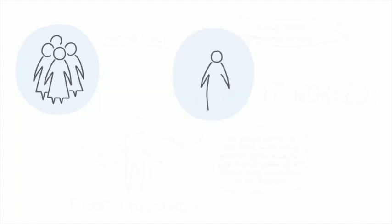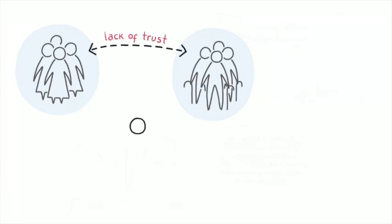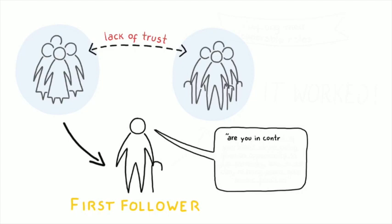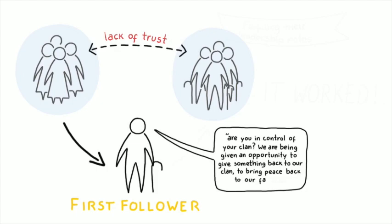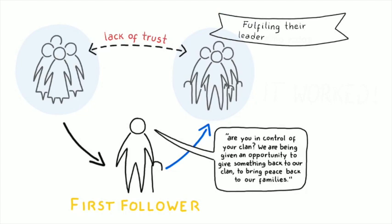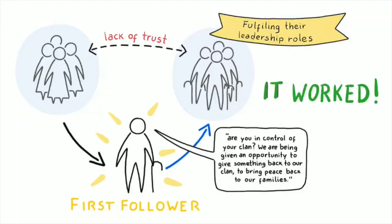As conversations between the women and the elders evolved, there was a natural lack of faith and trust from the elders. But there was one exception, an outlier. This particular very old man became the first follower of the movement originated by the women. He managed to play the key role of bridging the ideas of the women into a language that could be understood by his fellow men. 'Are you in control of your clan? We are being given an opportunity to give something back to our clan, to bring peace back to our families.' So this was not about the women anymore. This was about them fulfilling their leadership roles and being accountable for it. And it worked.